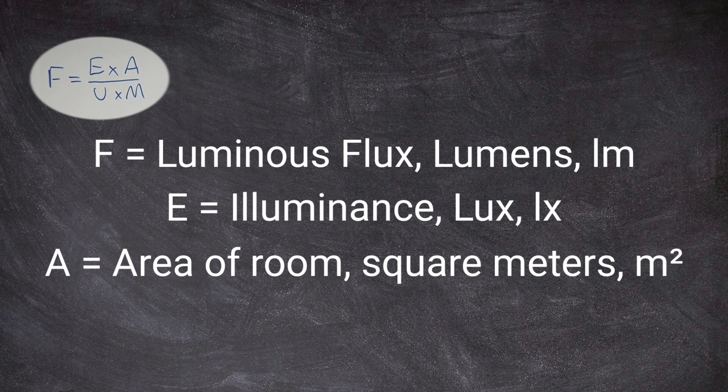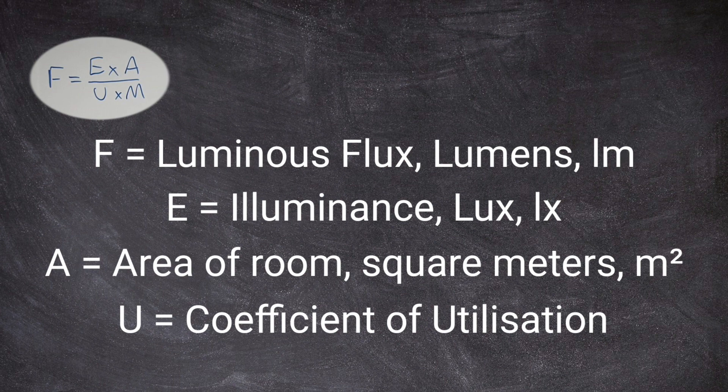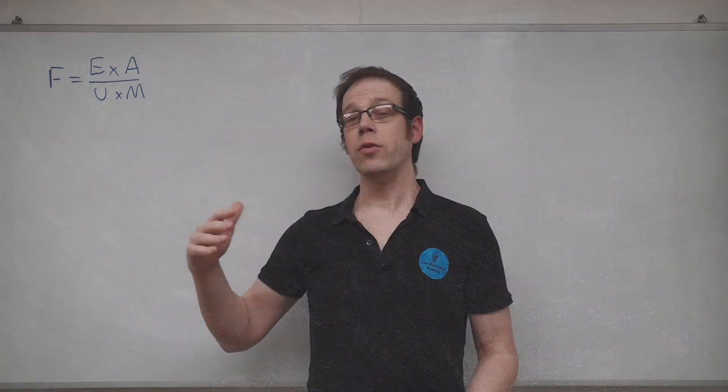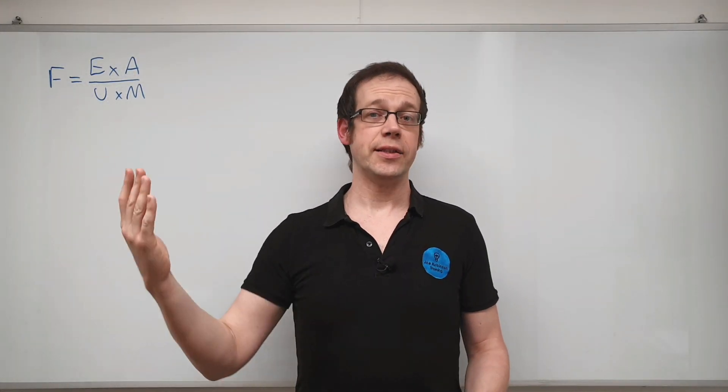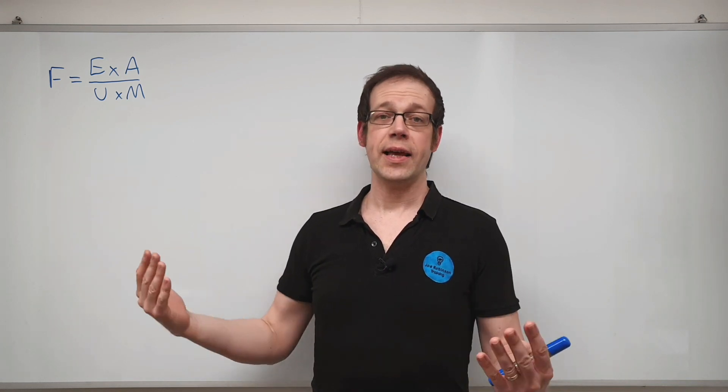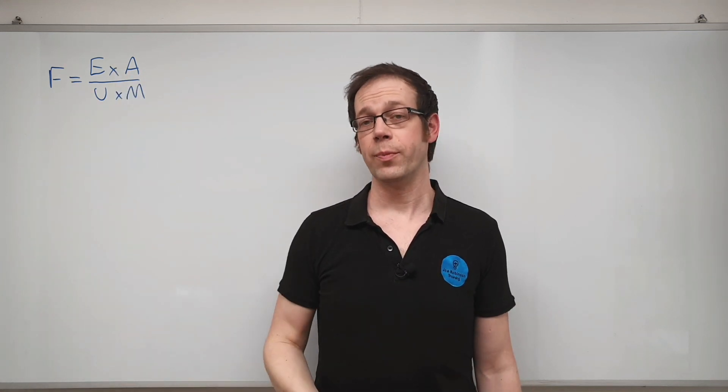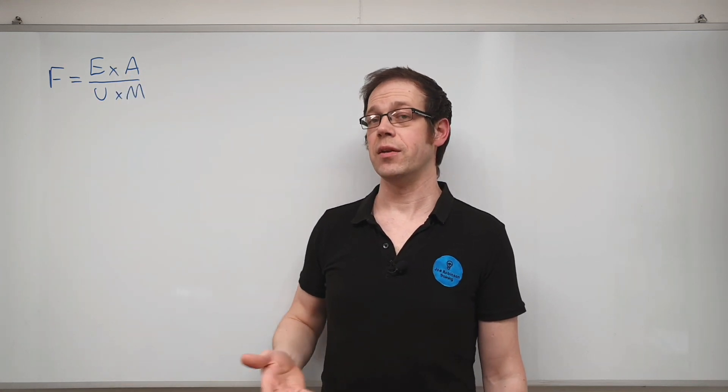So U is what we call the coefficient of utilization or sometimes the utilization factor and what this refers to is it's a number that takes into account things like how reflective the surfaces are in a room so how much light bounces off a wall or how much light bounces off the floor or even the ceiling and it also takes into account things like how much glass there is how many windows there are in a room so obviously if you've got a room with a lot of glass in it and at night time there's no blinds over those glass a lot of the light will simply fall out of the window and not be bounced back into the room which is going to make a difference to your light levels inside there.